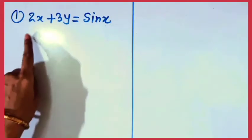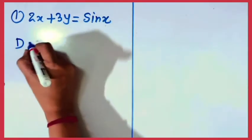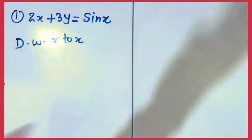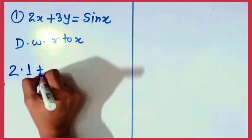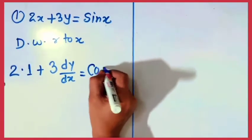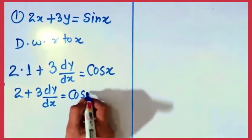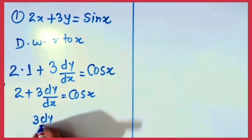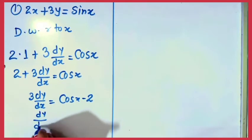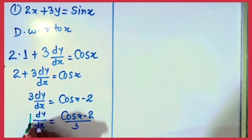Now see Exercise 5.3. The first question is: 2x plus 3y equals sin x, find dy/dx. In all questions we have to find dy/dx only. Differentiating with respect to x: the derivative of 2x is 2, constant 3 remains as is, and the derivative of y is dy/dx. So 2 plus 3 dy/dx equals cos x. Therefore 3 dy/dx equals cos x minus 2, and finally dy/dx equals (cos x minus 2) divided by 3.